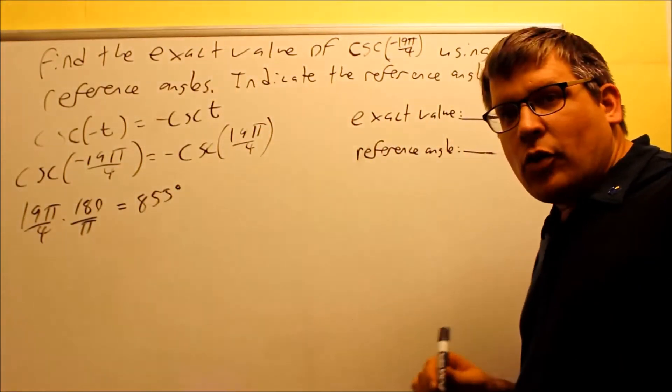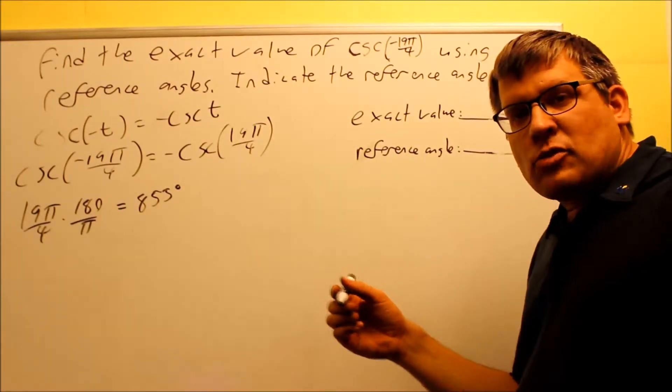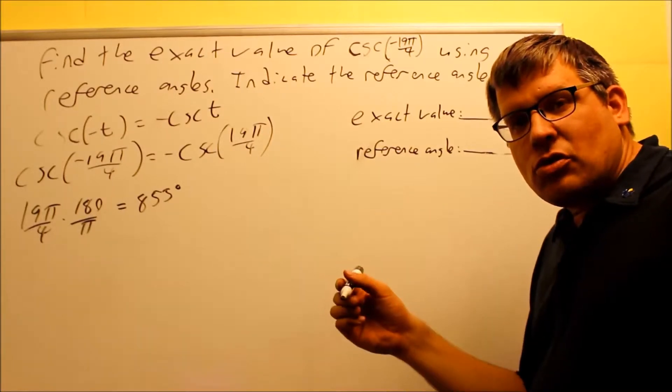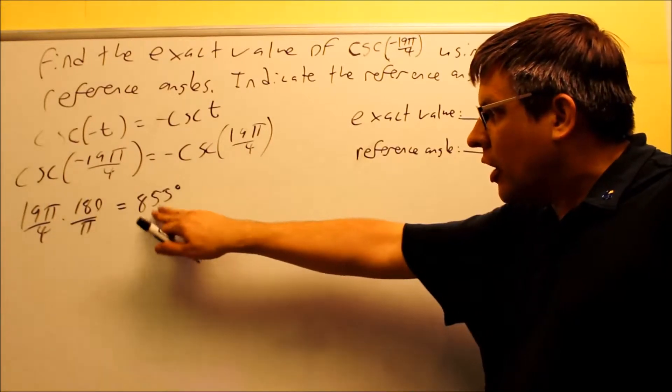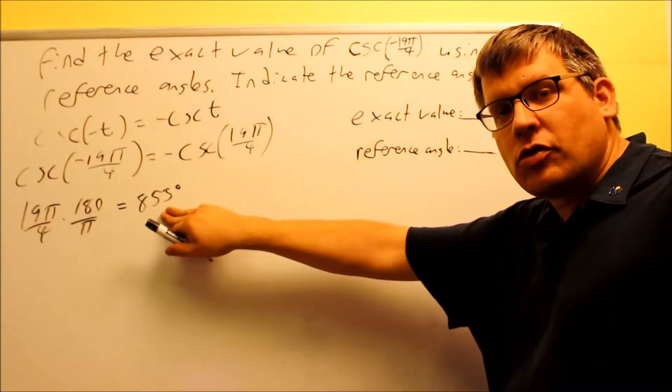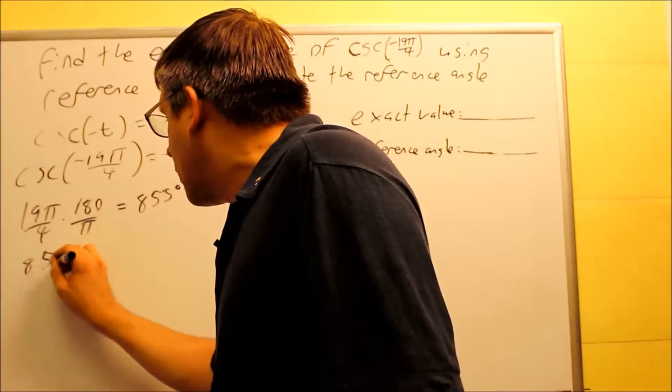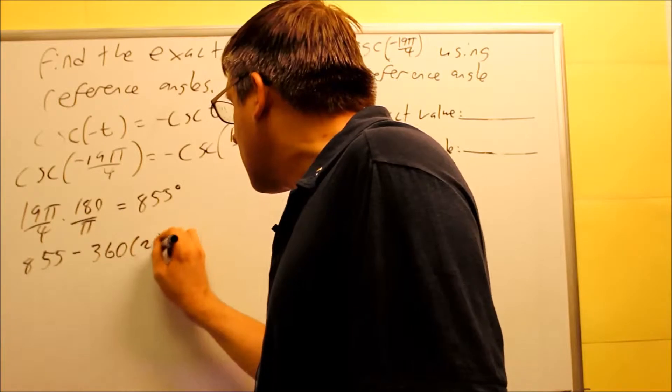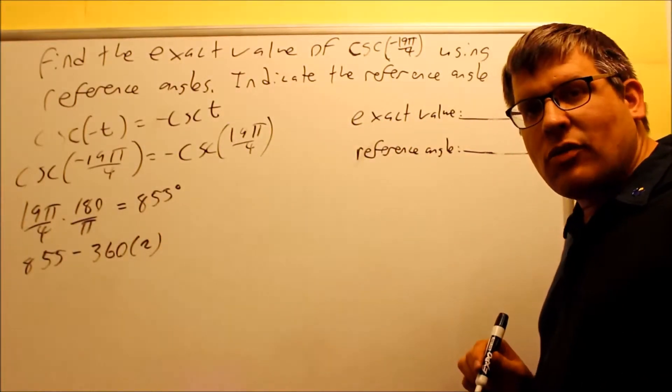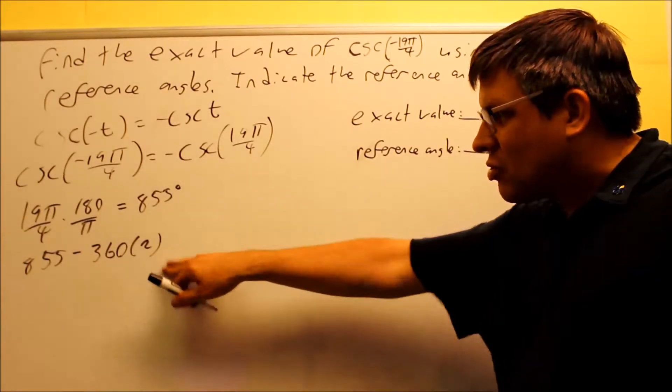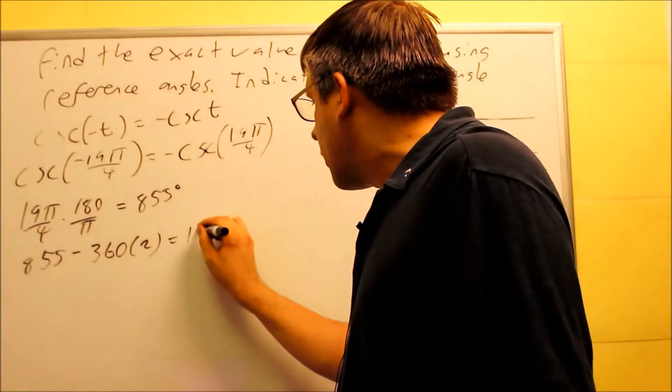So 855, we would have to divide by 360 to see how many times that's going to go in there. 360 times 1 is 360. 360 times 2 is 720. If I go one more, I'm going to be over 855. So therefore, I know that I can subtract 2 revolutions from 855. So I'm going to take 855 and subtract 360 times 2. So I'm subtracting really 720 from that one. If I subtract this,